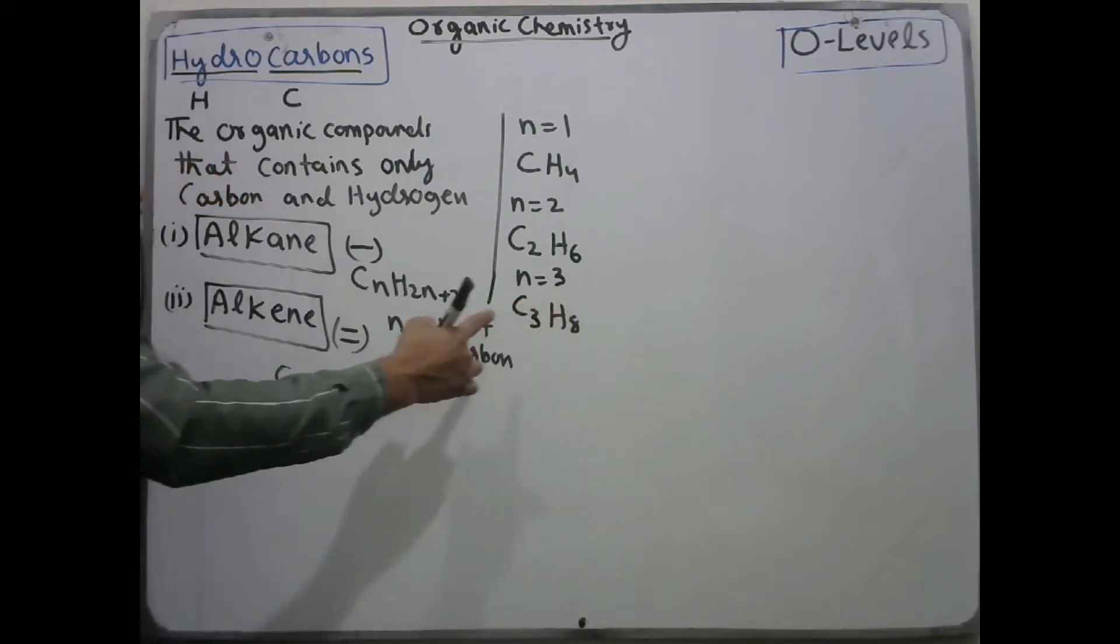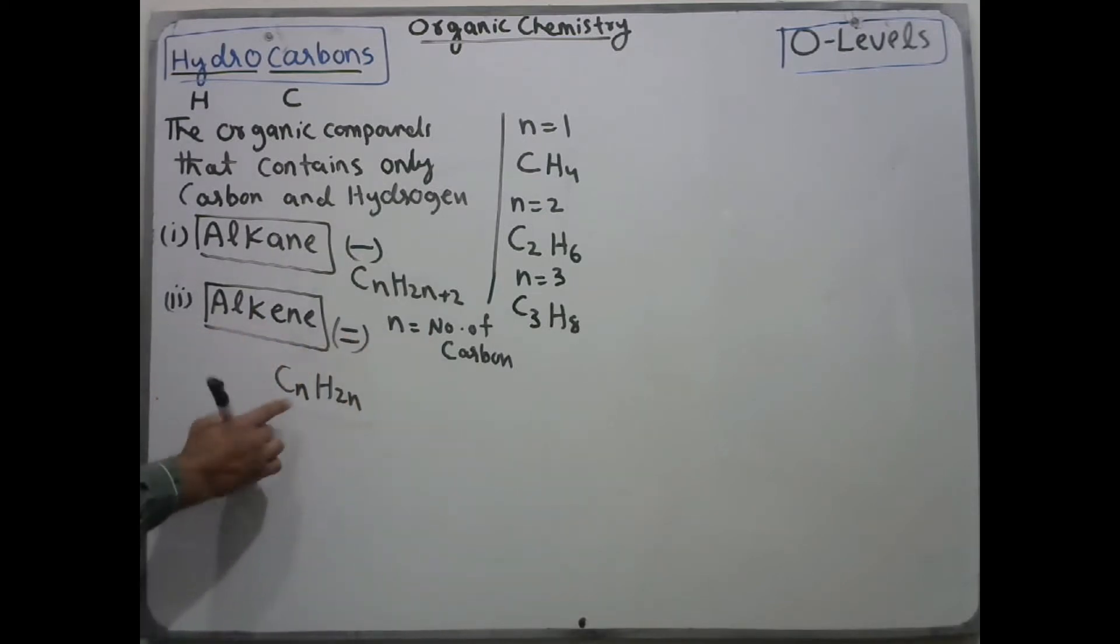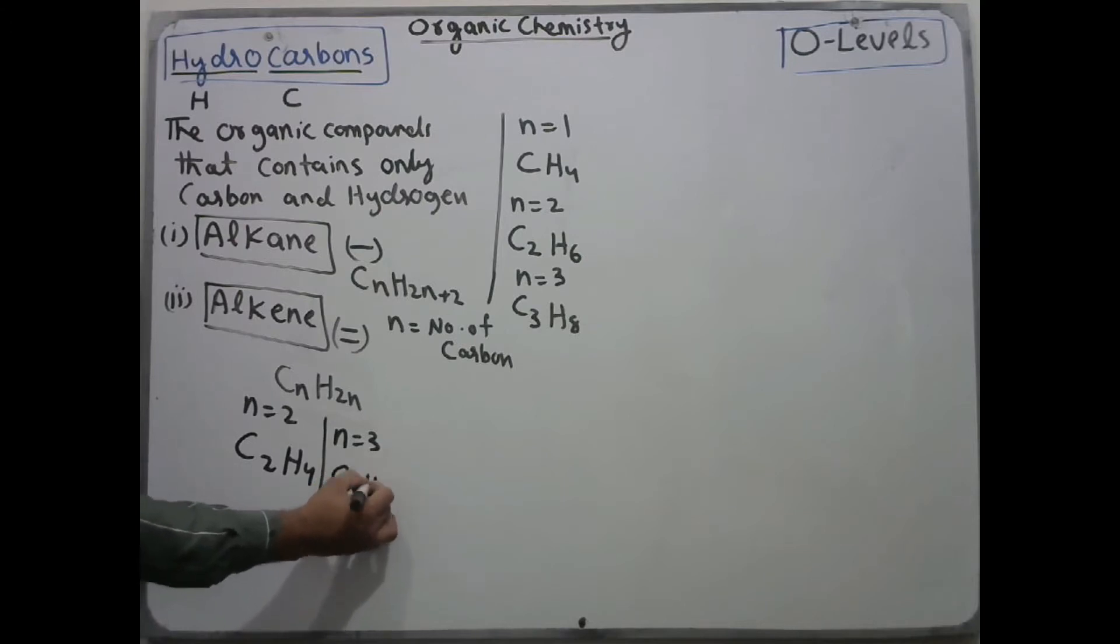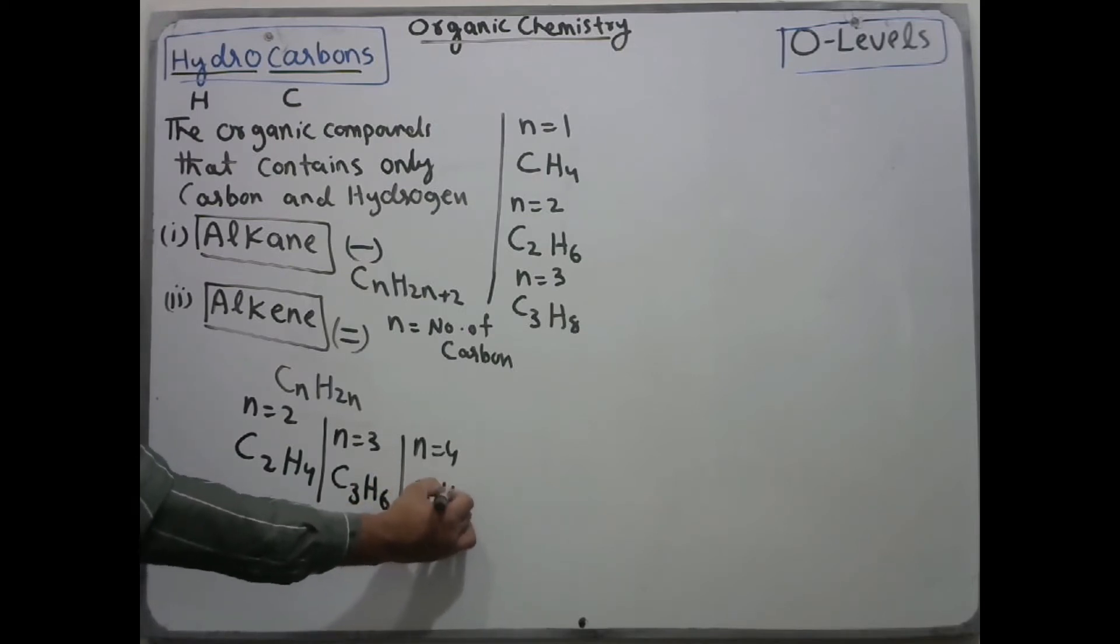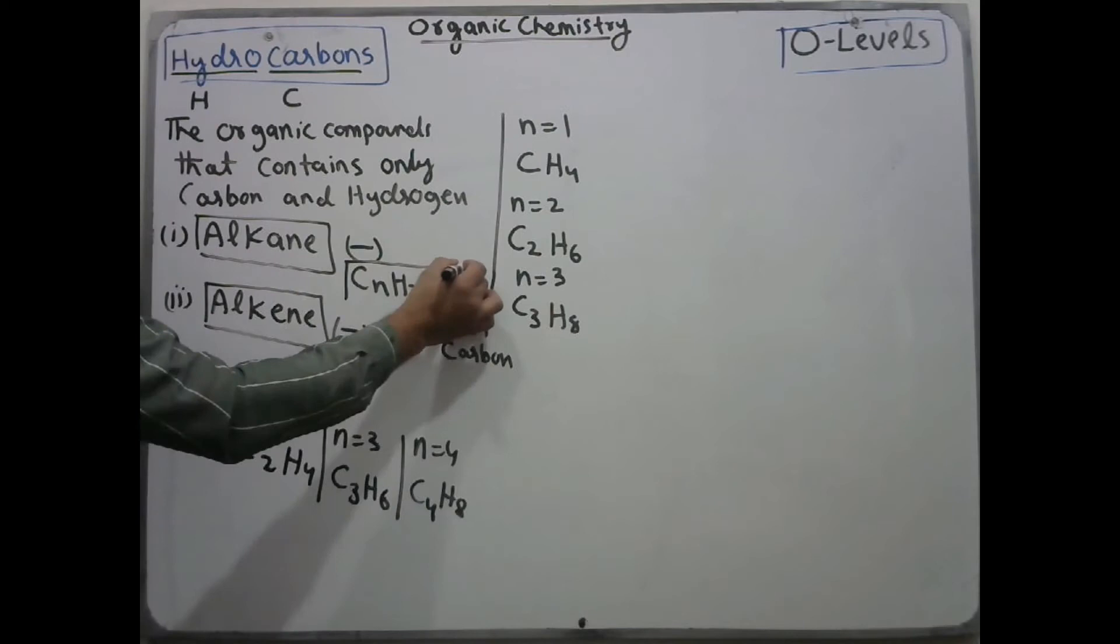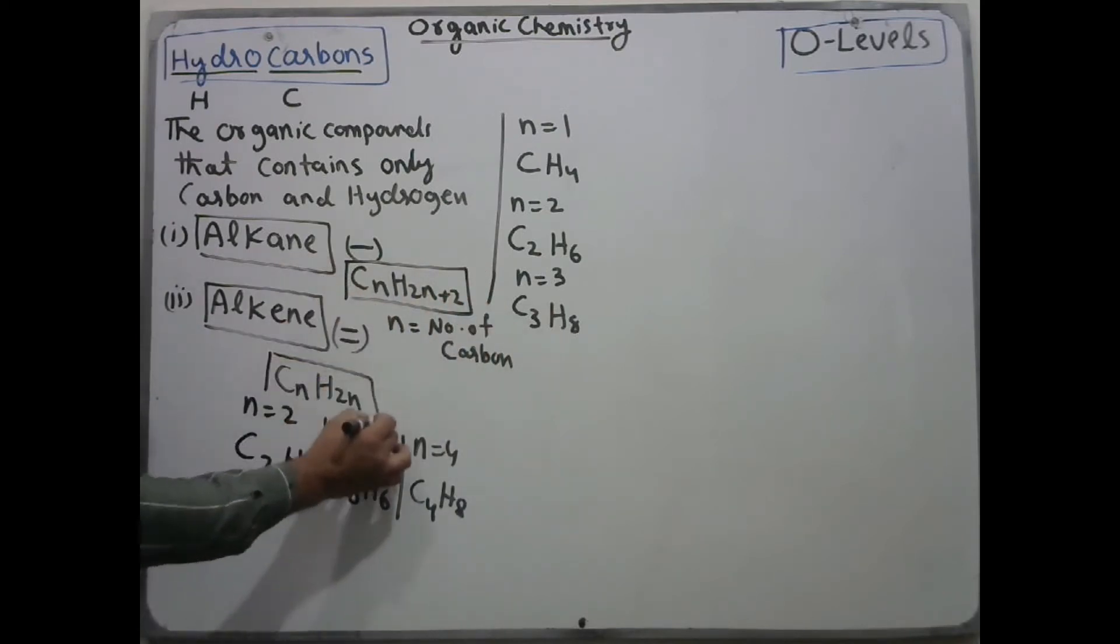Similarly for alkenes, if you put n minimum two, because for a double bond there must be minimum one carbon on both sides, so minimum two carbons should be there. If you put two here, your formula is C2H4. If you put n equal to three, then your formula is C3H6. If you place four here, your formula is C4H8.